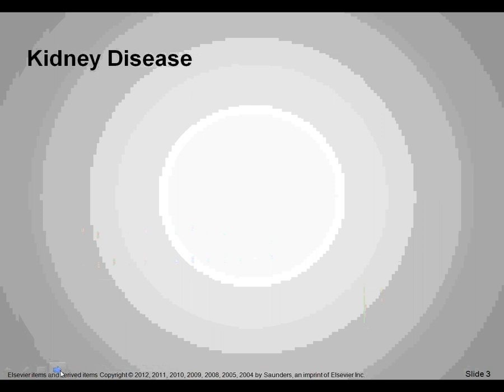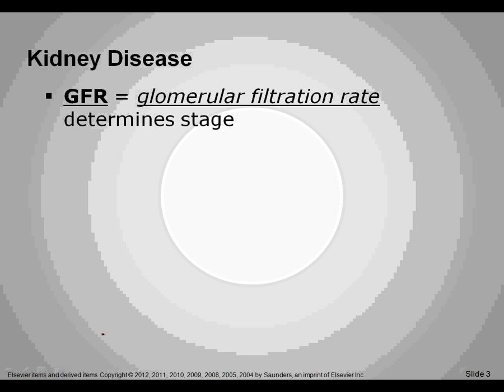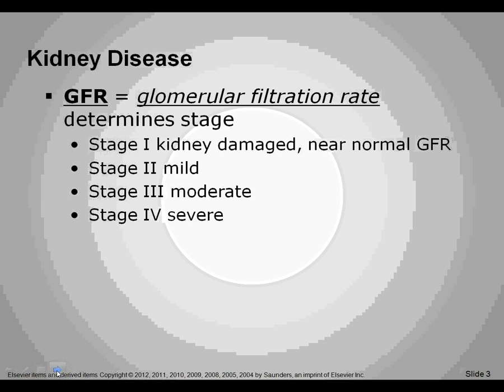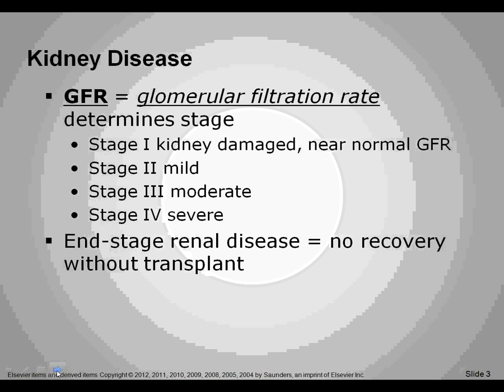Kidney disease staging is based on the glomerular filtration rate, which determines the stage. The glomerulus and the nephron linked together create the power source for the kidneys and help the filtration rate. Stage 1 is when the kidney is damaged with normal GFR, stage 2 is mild, stage 3 is moderate, stage 4 is severe, and after stage 4 the patient goes into end-stage renal disease where there is no recovery without a transplant.